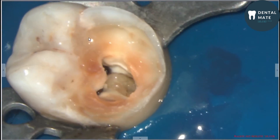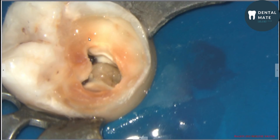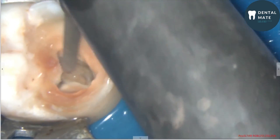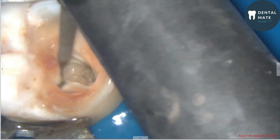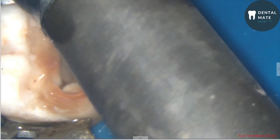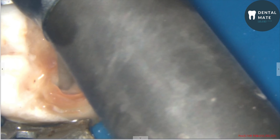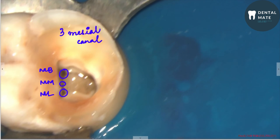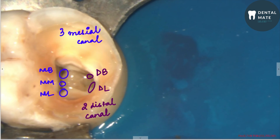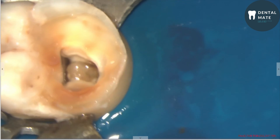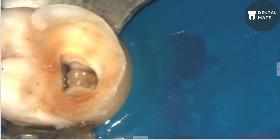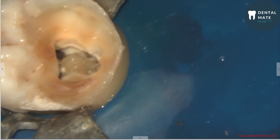After completely de-roofing the pulp chamber, we have to gain a straight-line access to all the orifices and to the canals. Now we can appreciate three mesial and two distal canal orifices: mesiobuccal, mid-mesial, mesiolingual, distobuccal, and distolingual orifices.